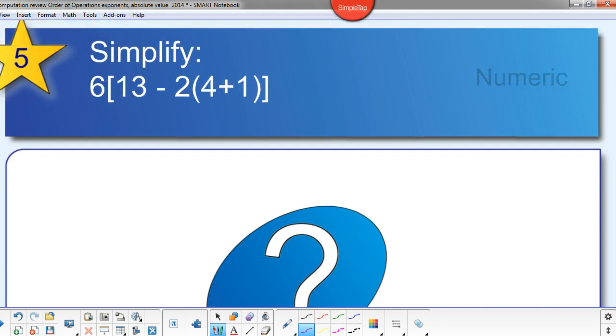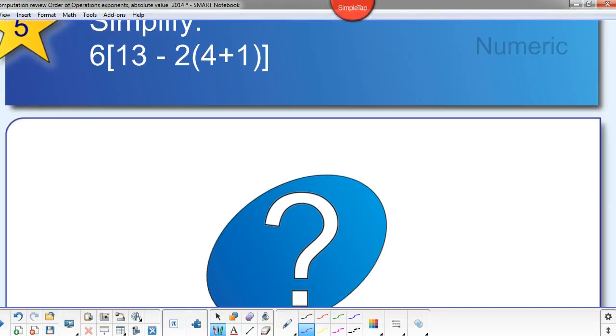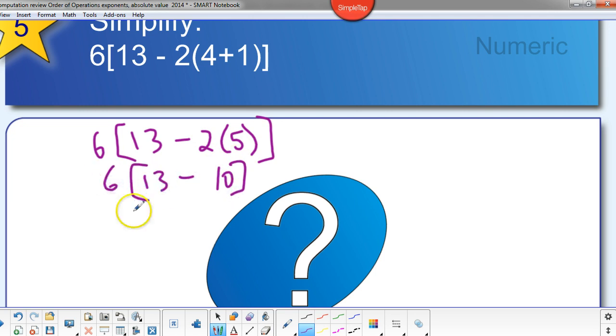Alright. Simplify that one. Alright, hit pause. And I'll give you the answer. Okay. We have six in the bracket, inside the bracket. We've got to do the parentheses first, so it becomes a five in there. And we'll do the multiplication here, it'll be ten. So the bracket itself becomes thirteen minus ten, or three. So this just turns into six times three, which is eighteen.